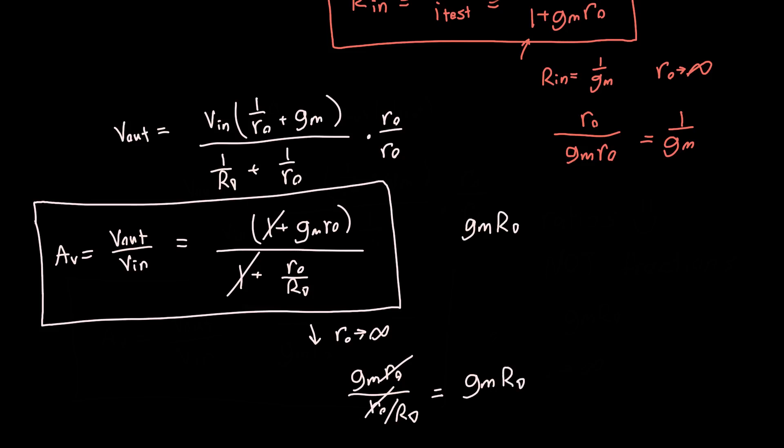So, this is the more general expression for the gain. This is the more precise expression when we do want to take into account RO, but we see that when RO is very large it reduces to our previous expression, and so this is the complete model for the common gate amplifier.